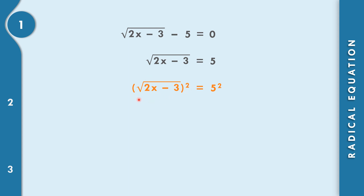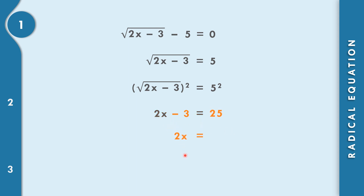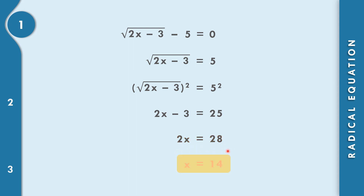Squaring both sides cancels the radical, giving us 2x minus 3 equals 25. Bringing the negative 3 to the right side: 25 plus 3 equals 28. Dividing both sides by 2, the answer is x equals 14.